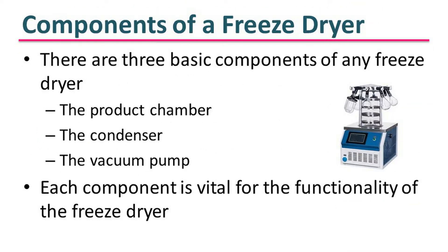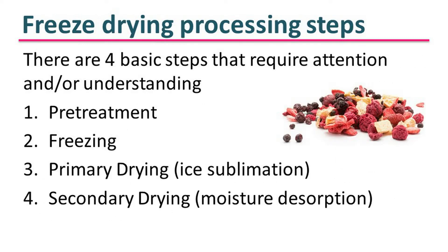There are three basic components of a freeze dryer: the product chamber, the condenser, and the vacuum pump. Each component is vital for the functionality of the freeze dryer. The four basic steps that require attention during freeze drying are pre-treatment, freezing, primary drying, and secondary drying.